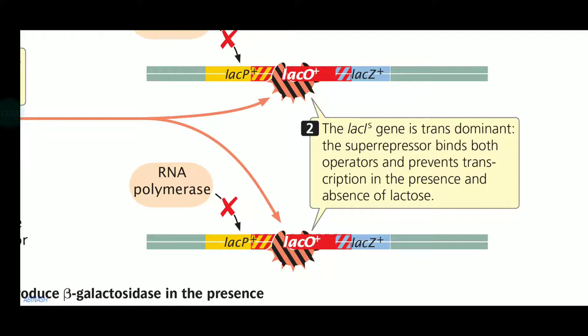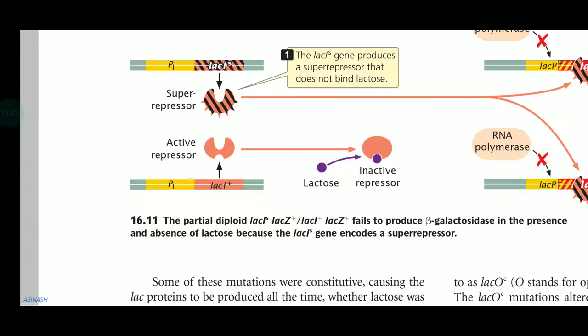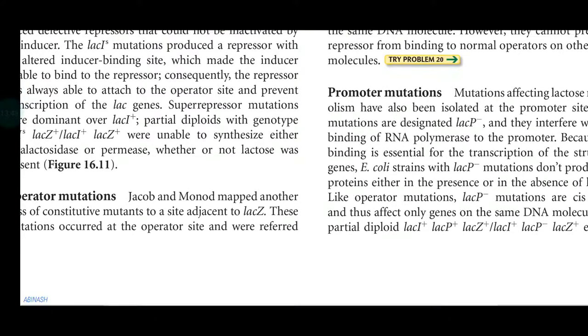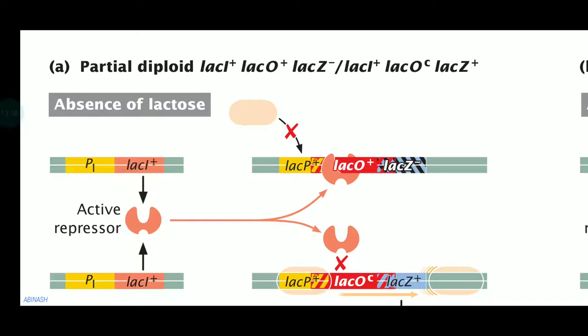Even though we have a normal lac Z plus gene, we still get no transcription because of this super repressor mutation of lac I. The formula for the partial diploid is: lac I plus, lac O plus, lac Z minus in the bacterial chromosome, and lac I plus, lac Oc in the plasmid chromosome.